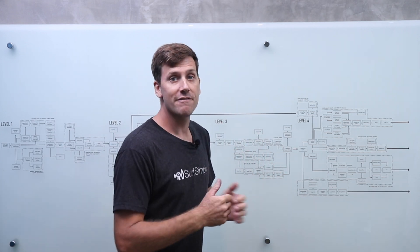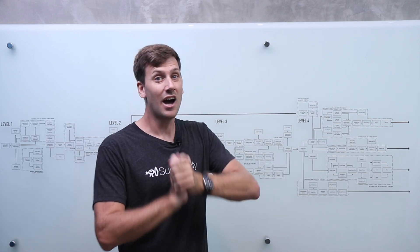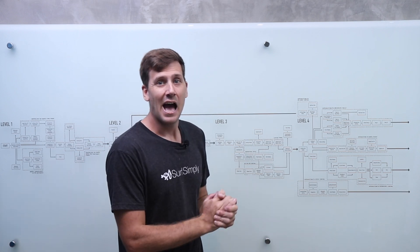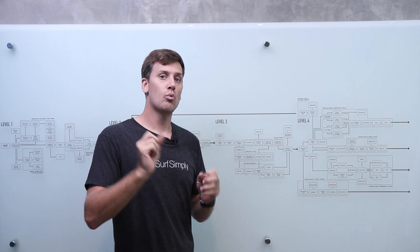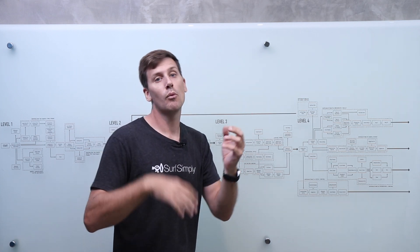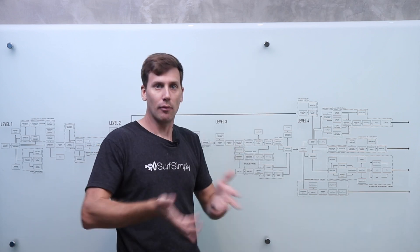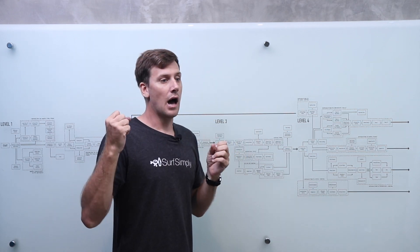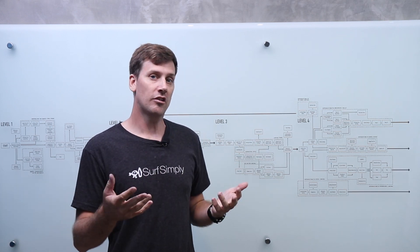So my first question today comes from Javier Bustinza. Javier, I hope I didn't butcher your name too badly. But Javier was asking about what would happen if you took two boards and you had one at 6'8" and one at 5'8" but otherwise they were identical, same sort of outline and width and thickness and volume, how would those boards differ when they were paddled or surfed?